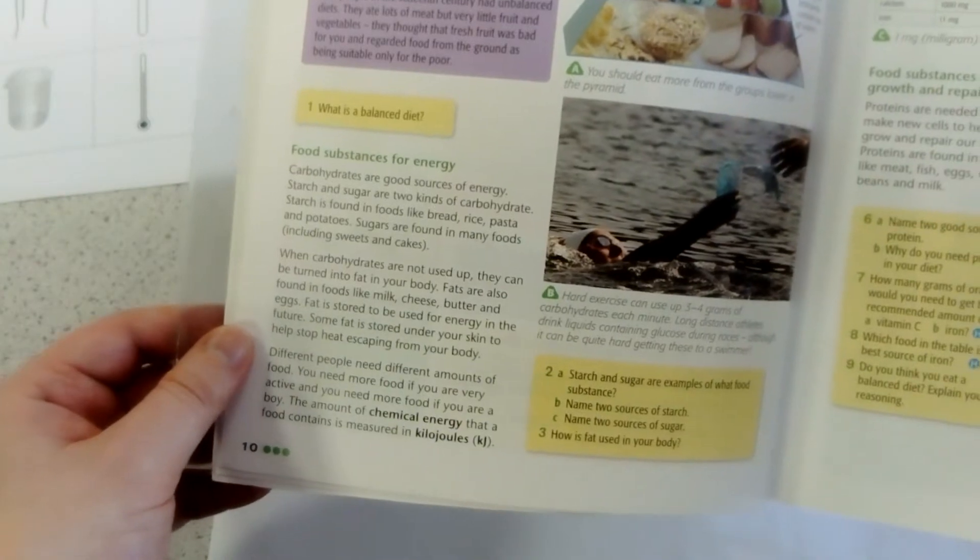So what you're going to do today is put together a concept map looking at all the stuff on your balanced diet. You'll have the year eight books - I believe the page is around page 10, 11, and onwards.